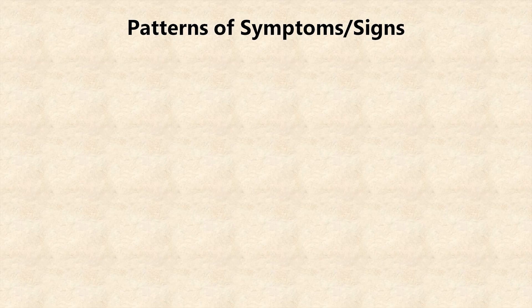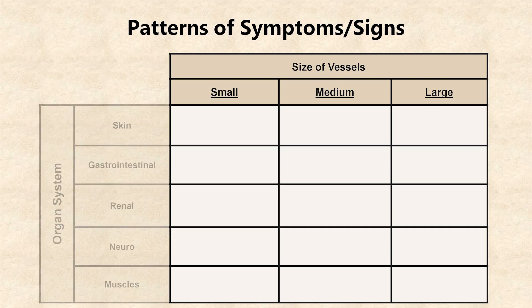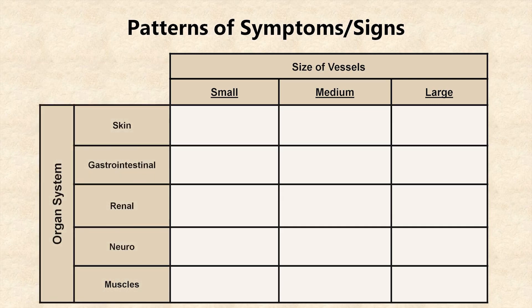The first layer of pattern recognition has to do with the size of the involved vessels, and the knowledge that vasculitis tends to affect five organ systems the most: the skin, gastrointestinal system, kidneys, nervous system, and the muscles. It can also affect the lungs, which is not common, although when it does happen, its involvement is usually very prominent.